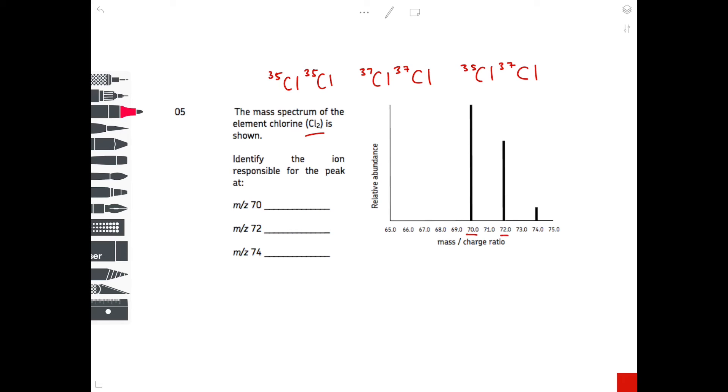So now when we identify the ion responsible for the peak at each of these mass to charge ratios, this makes sense that we have a 70, a 72, and a 74. Because look what happens when you add these up. That equals 70. This equals 74. And this equals 72. So for the mass to charge ratio of 70, clearly that's going to be the 35Cl. Remember it's an ion, so it needs to have a positive charge, and it will be both of them at the 35Cls. The 72 will be 35Cl, 37Cl, as I've shown above. And then lastly, the m/z 74—that will be two 37Cls.